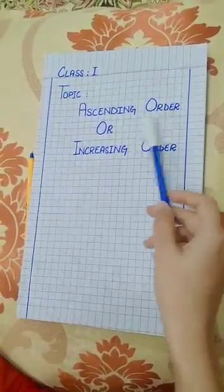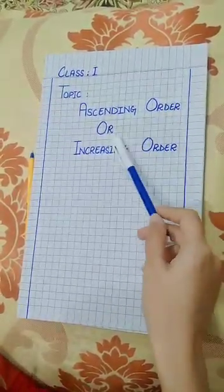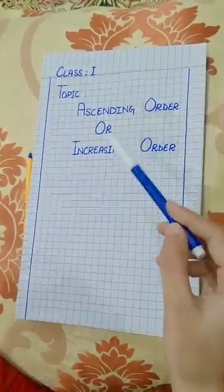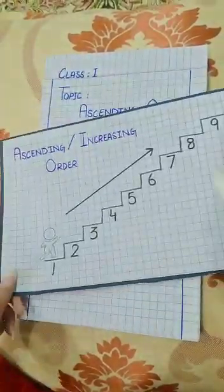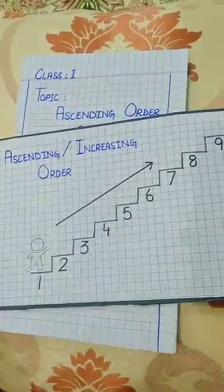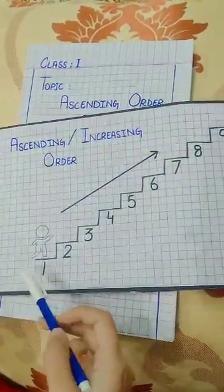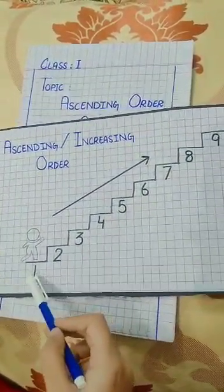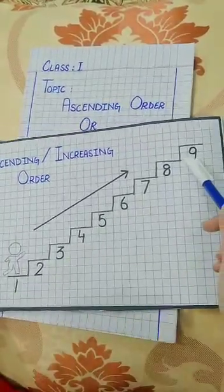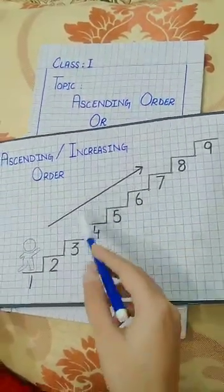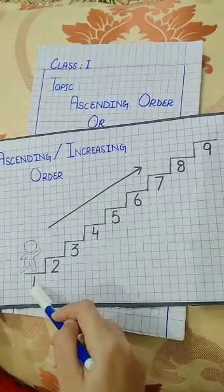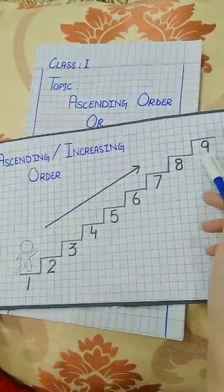What is the meaning of ascending order or increasing order? From the smallest to the greatest. What is the meaning of ascending or increasing order? From the smallest to the greatest.